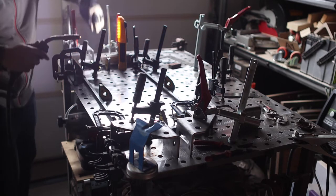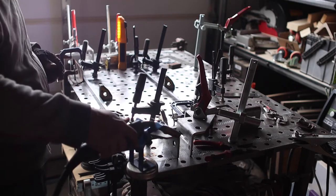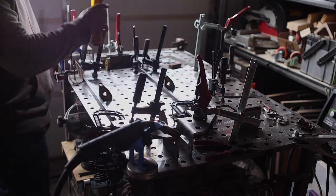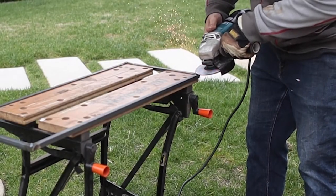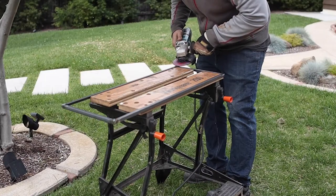I finished tacking the shelf sections and after I confirmed they're all square I finished out the welds. Then I took them over to my little workmate and ground down the welds in preparation for the next step.